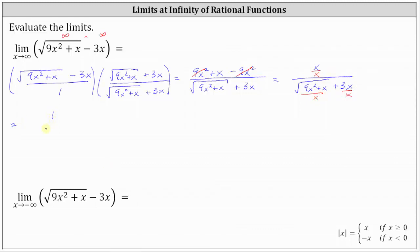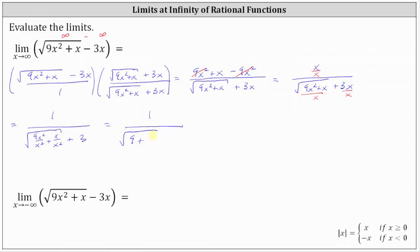Simplifying, the numerator is one. In the denominator, when we divide the square root by X, we bring the X under the square root, and therefore divide by X squared under the square root. So we have the square root of nine X squared divided by X squared plus X divided by X squared. And then plus three X divided by X simplifies to three. Simplifying under the square root: nine X squared divided by X squared is nine, plus X divided by X squared simplifies to one over X. And then we have plus three.